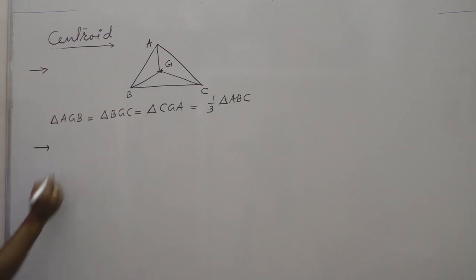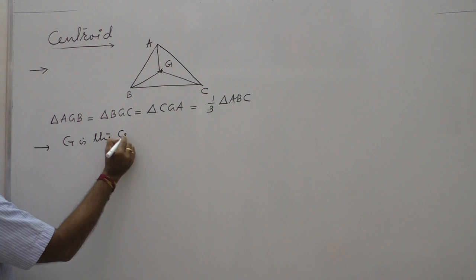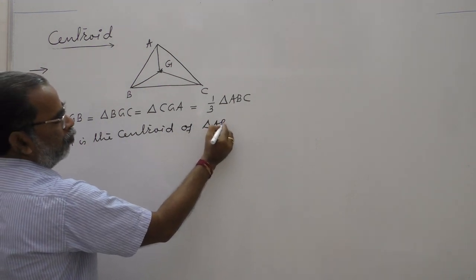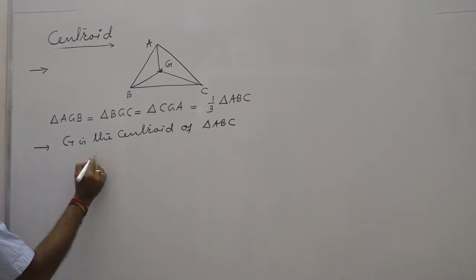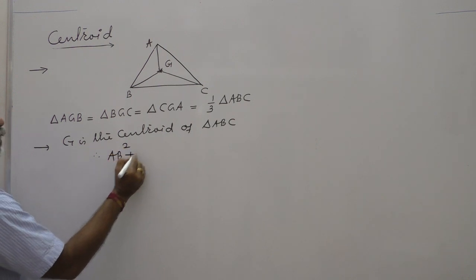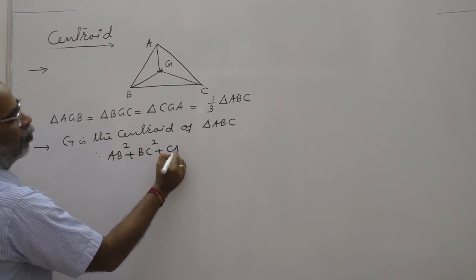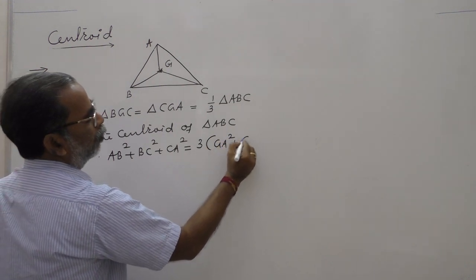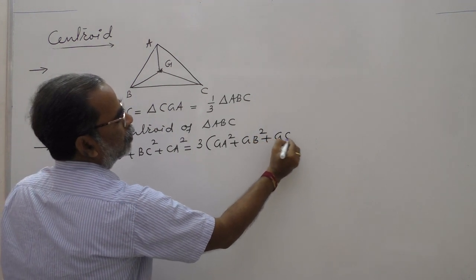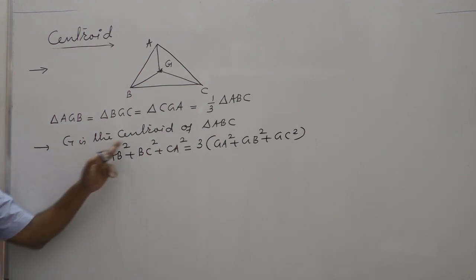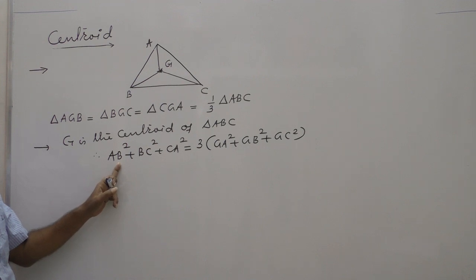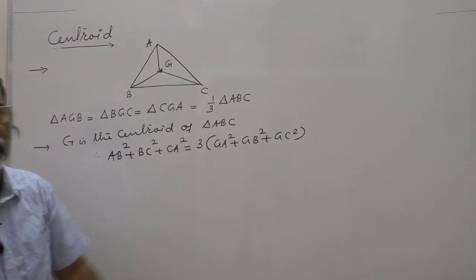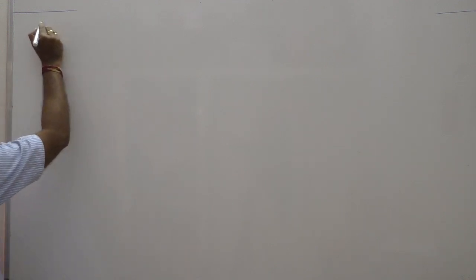If G is the centroid of triangle ABC, then the sum of the squares of the sides equals three times the sum of the squares of the distances from the centroid to each vertex: AB² + BC² + CA² = 3(GA² + GB² + GC²).